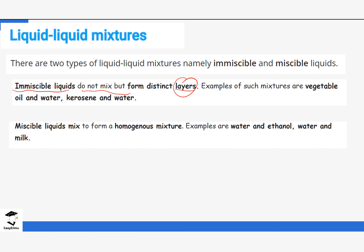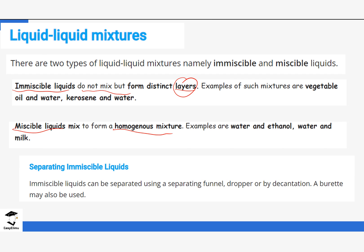Then we have miscible liquids, where they form one layer — we say they are homogeneous in nature. For example, if you mix water and ethanol you form one uniform mixture, and also if you mix water and milk, especially when making tea, you notice it forms one layer and doesn't form different layers — so we say it is homogeneous. Today we will concentrate on separating immiscible liquids.